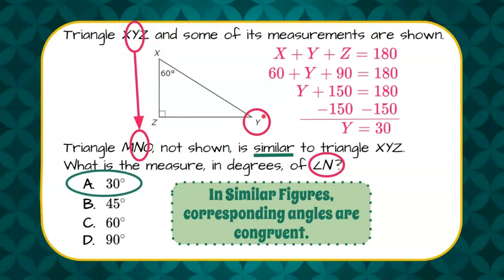So there we have it. Y is 30 degrees, and angle N is 30 degrees.